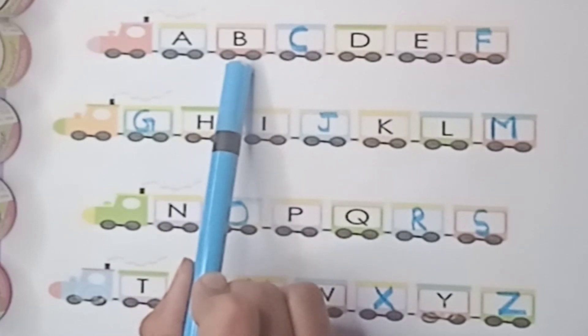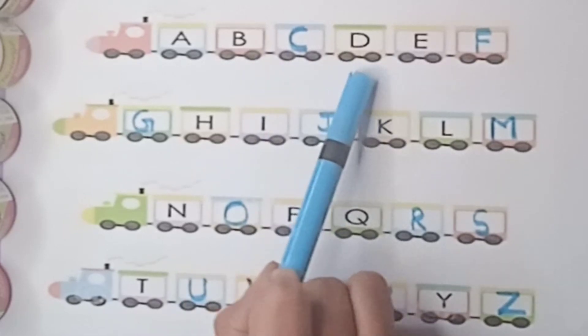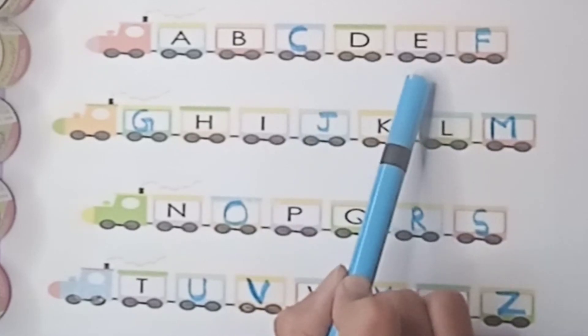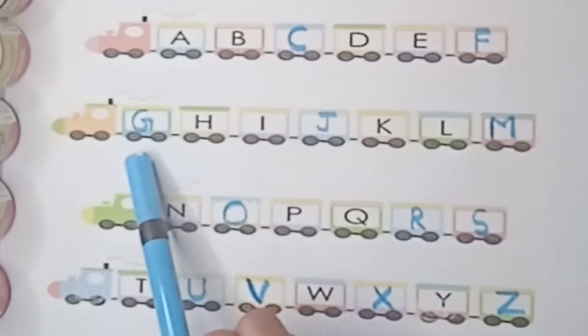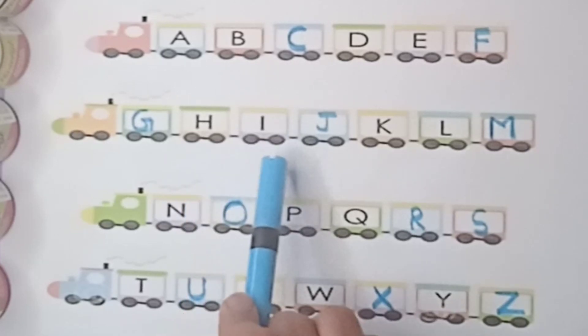A for apple, B for ball, C for cat, D for dog, E for elephant, F for fish, G for grapes.